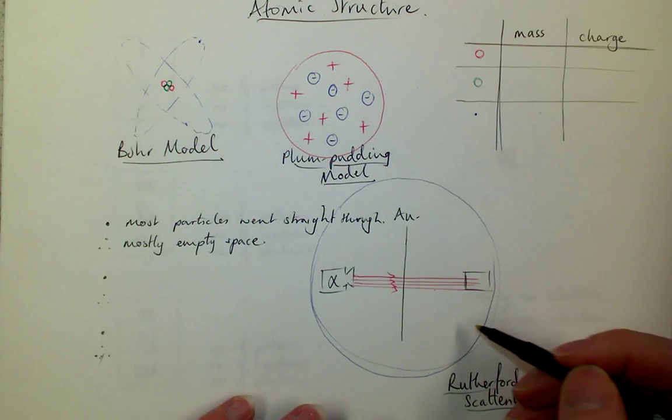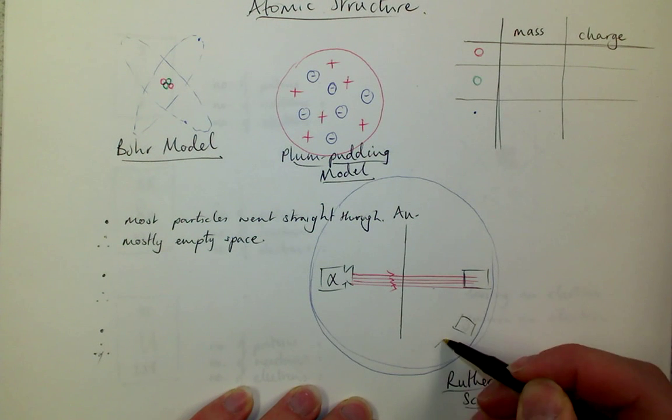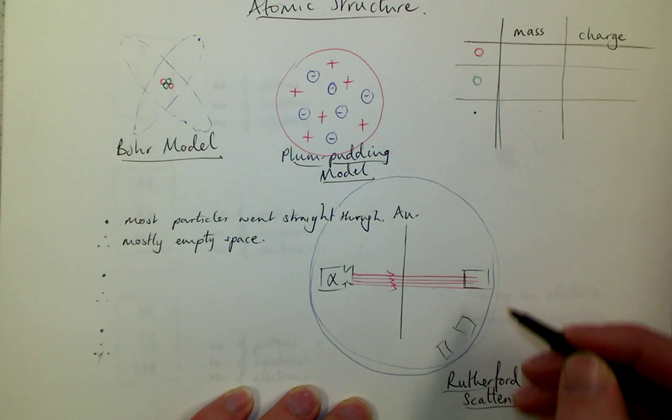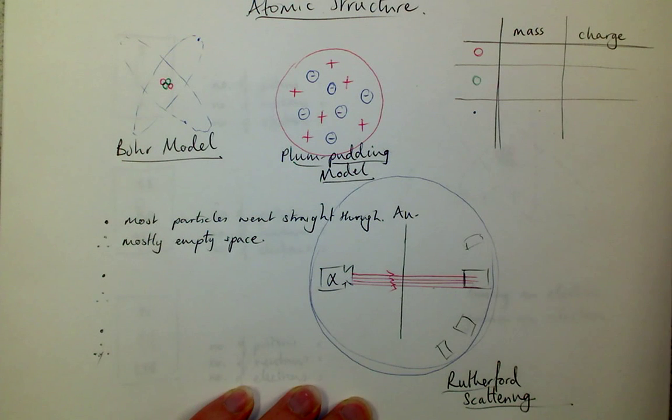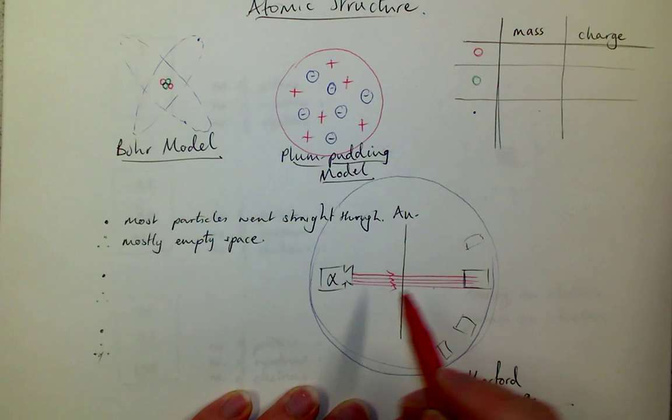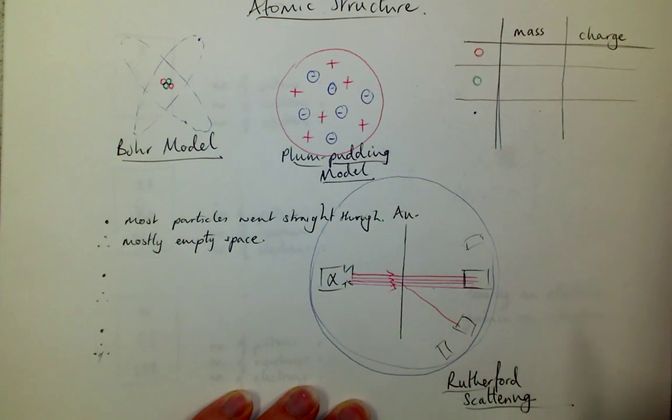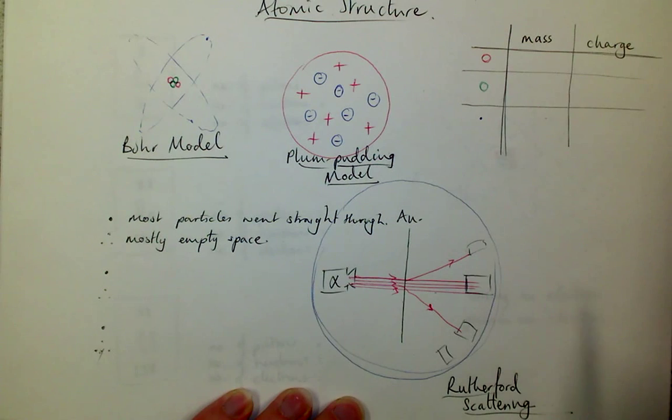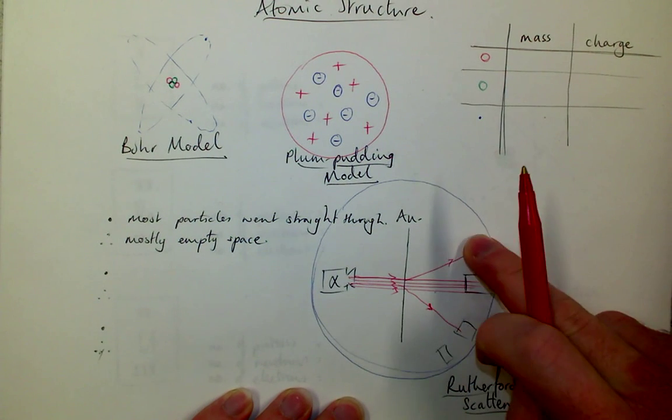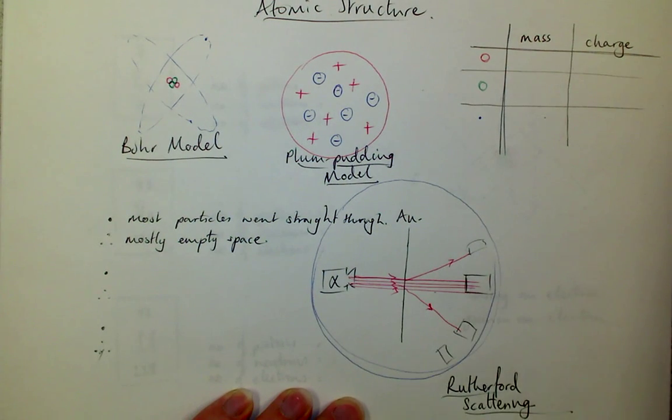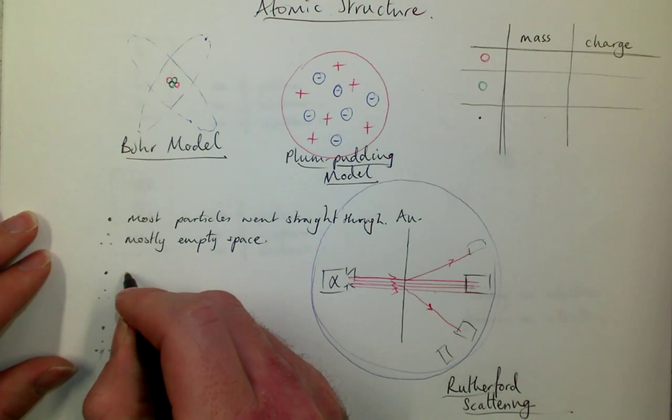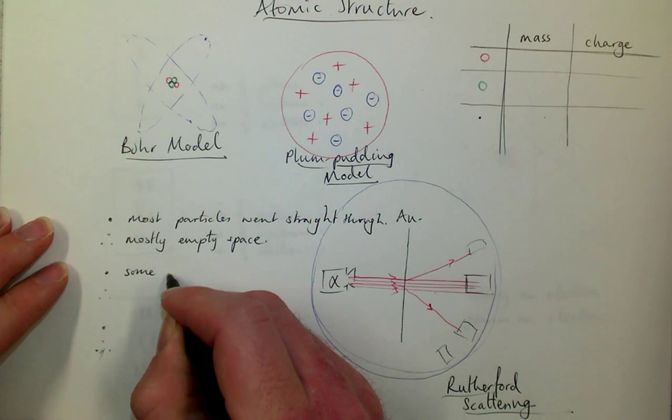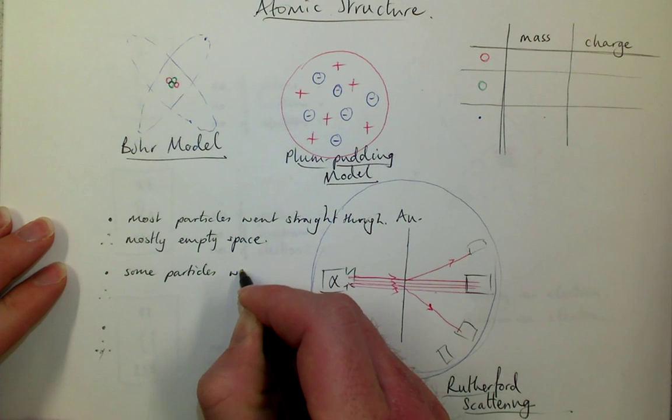Then he moved his detector around. So he moved it to these positions and up here as well. And he noticed that some particles, not very many, were being deflected through small angles. So some, not anywhere near as many, we're talking thousands this way for only about 10 or 20 these ways. Some particles were deflected.